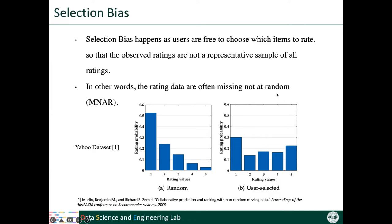Another equivalent expression of selection bias is called the Missing Not At Random (MNAR) problem. Given that users select which items to rate by themselves, the unobserved ratings are not missing randomly, but are dependent on the underlying rating a user would give to an item. However, to learn an ideal unbiased rating model, we need data that is missing at random.